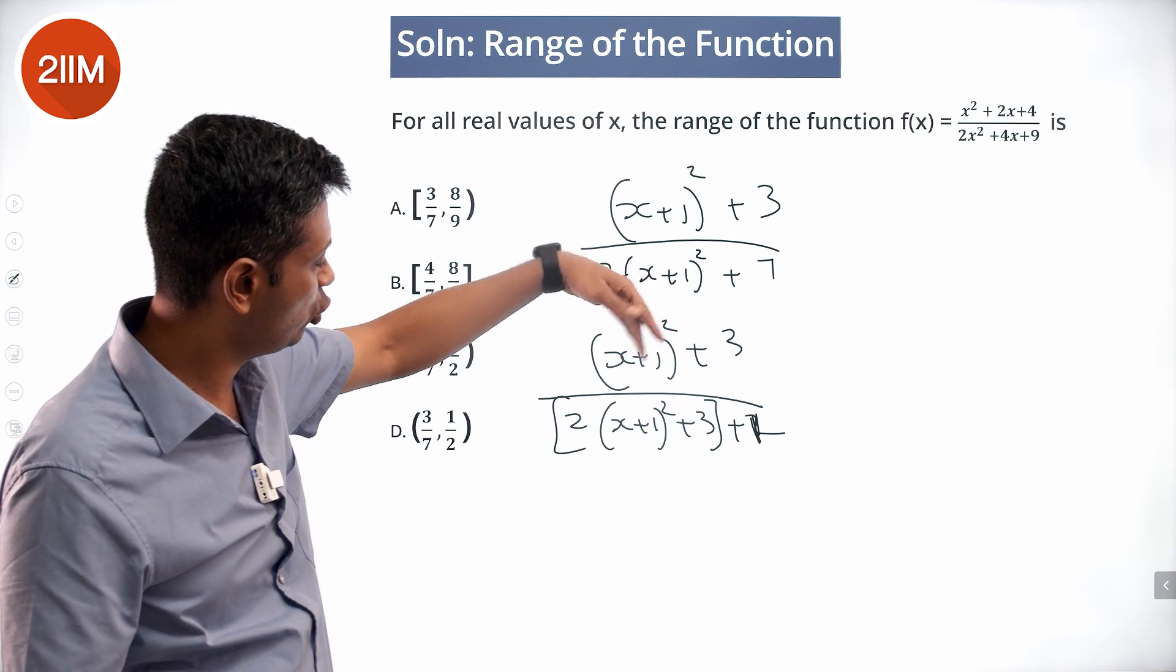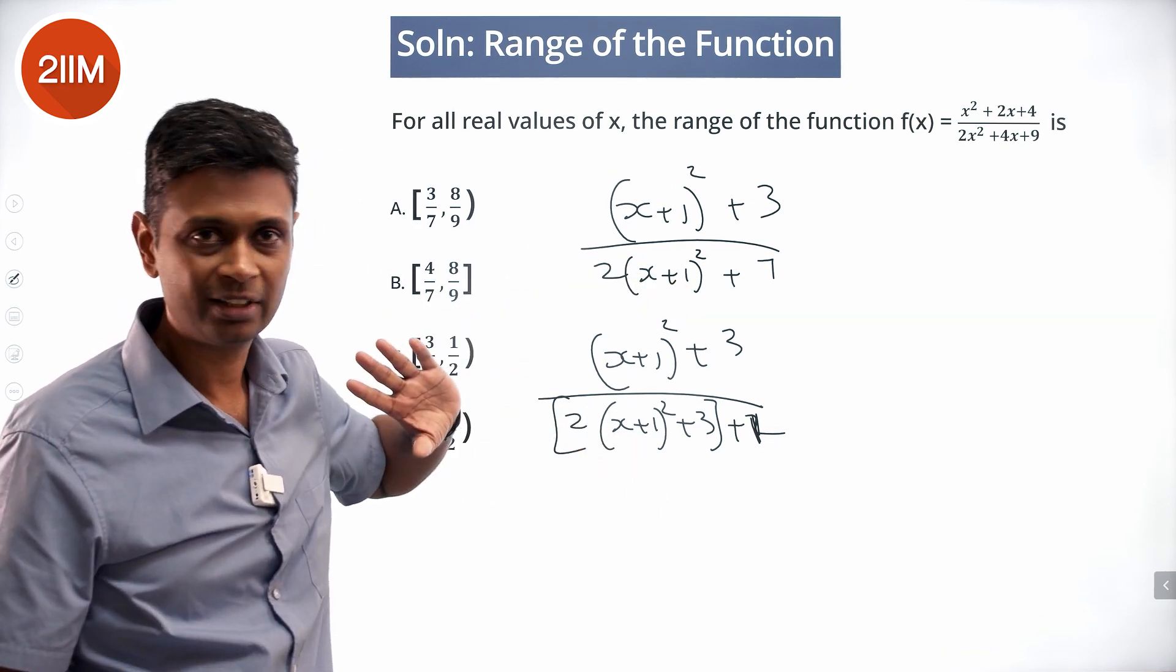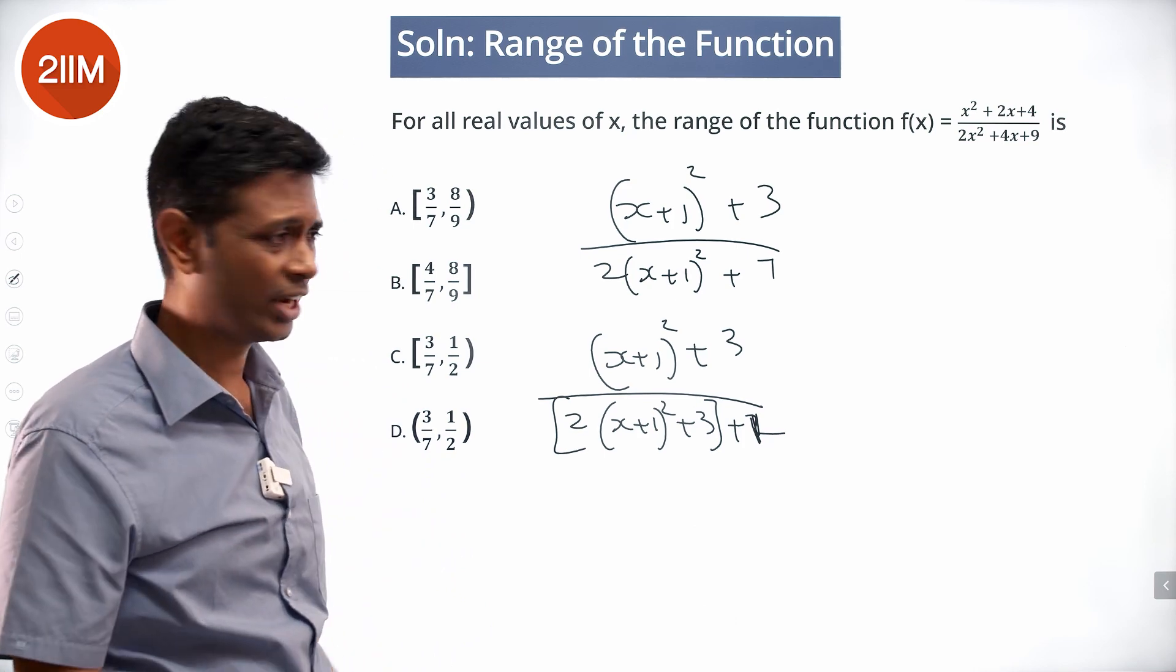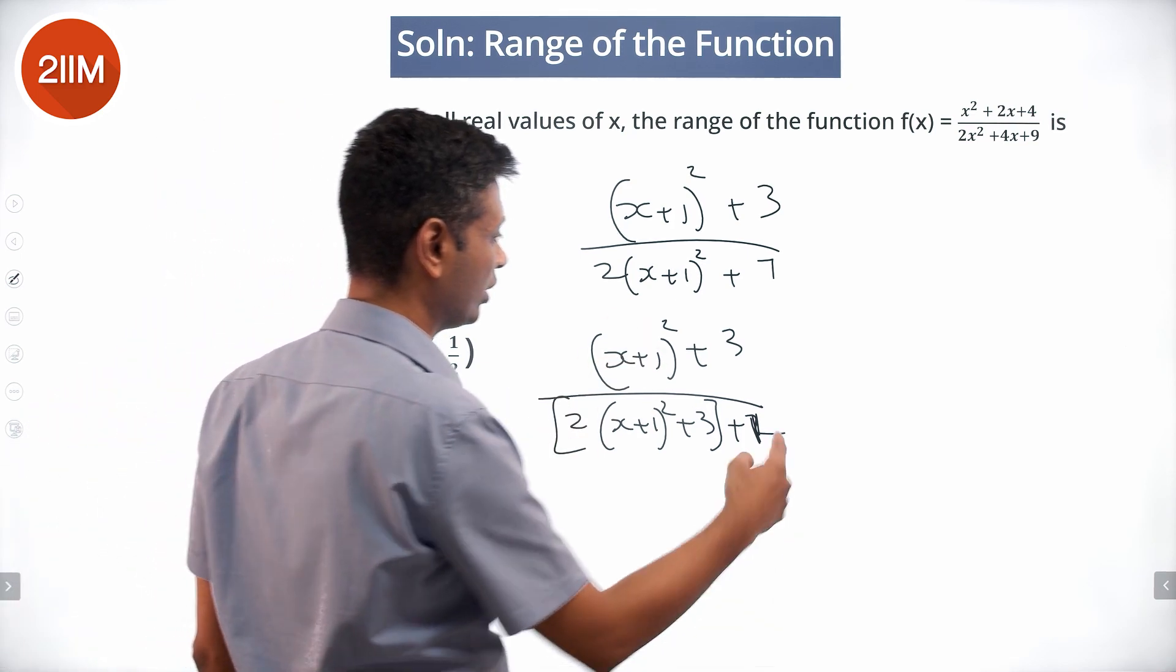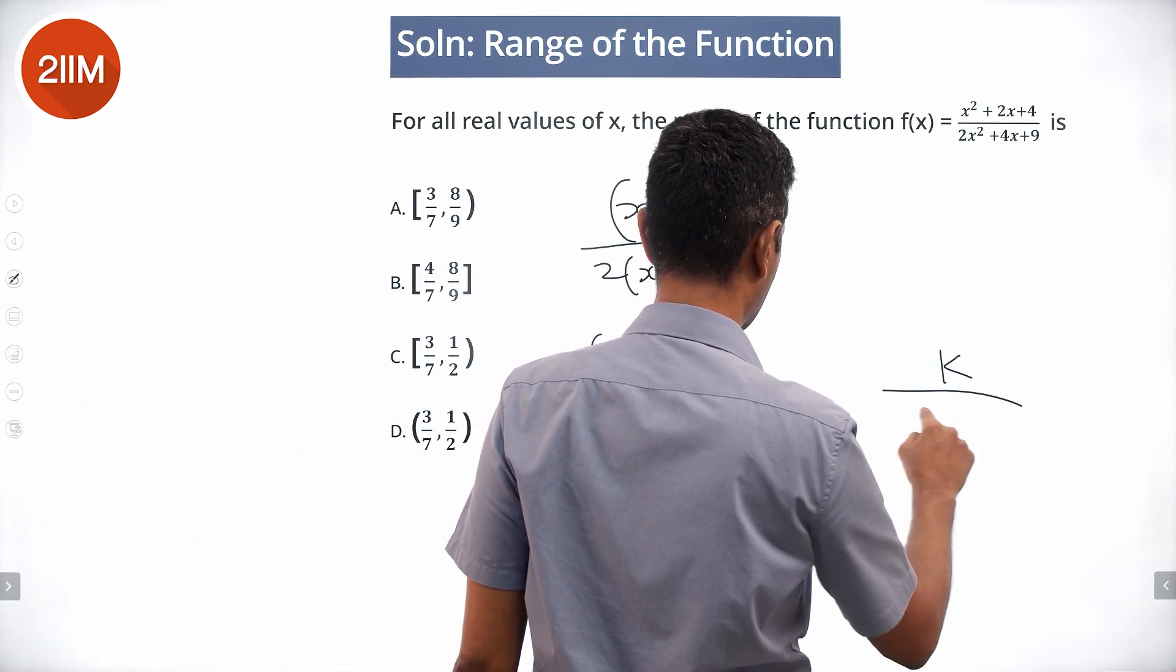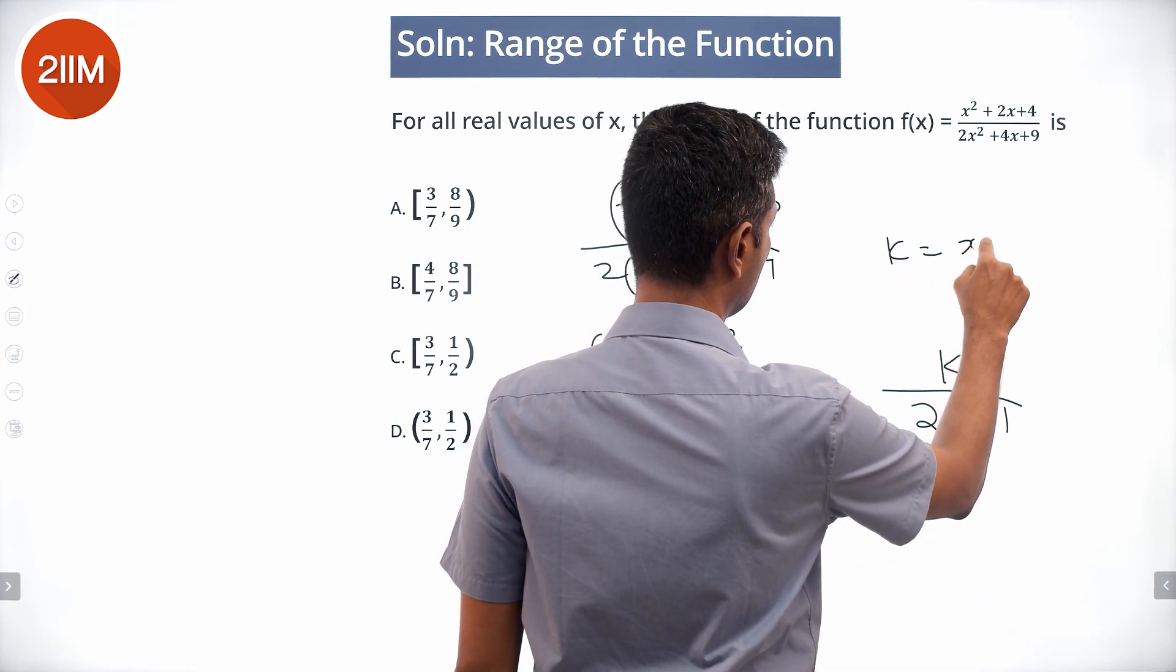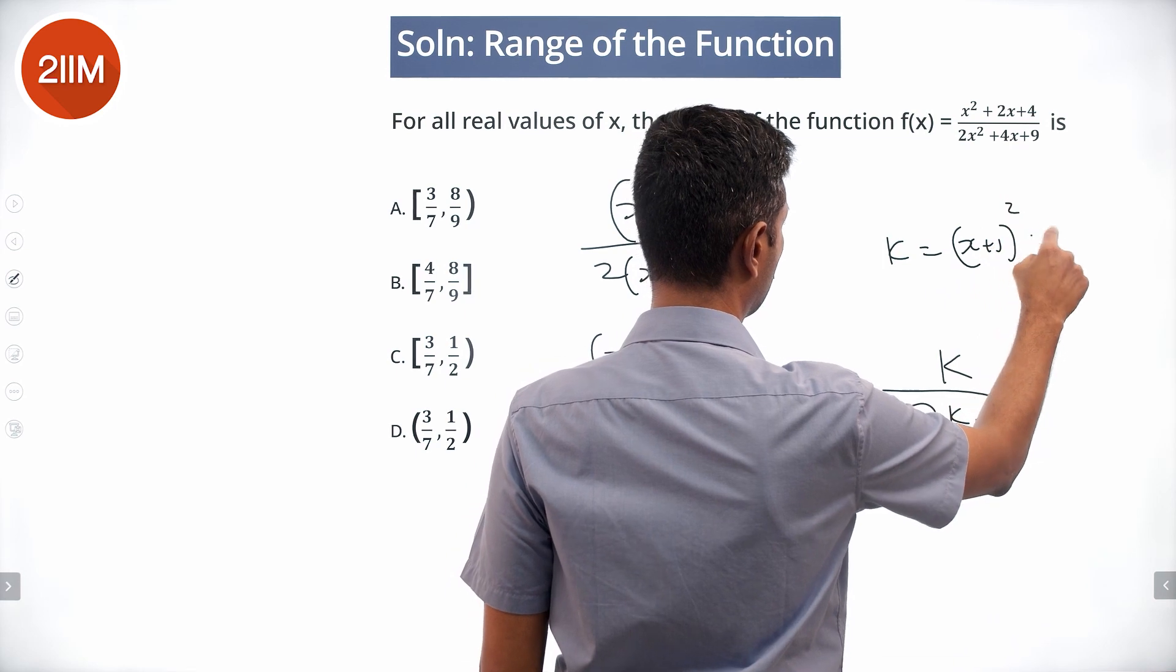I am writing the same numerator, replicating it in the denominator, and then plonking a plus 1 outside of it. So x plus 1 whole square plus 3 I am going to call it as k. This is k by 2k plus 1, where k is x plus 1 whole square plus 3.